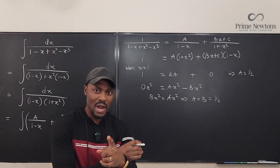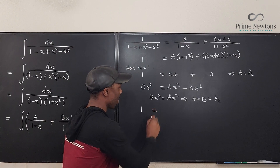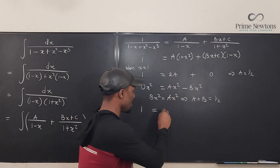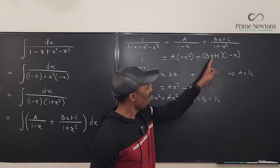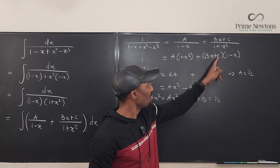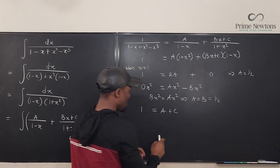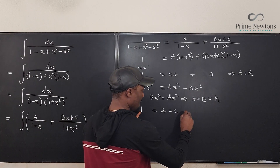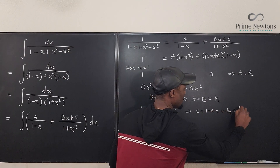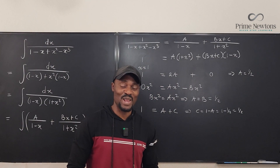Now for the constant terms. Expanding the right side, the constants are A from A(1 + x²) and C from (Bx + C)(1 - x). So A + C = 1. Since A = 1/2, we get C = 1 - 1/2 = 1/2. So A = B = C = 1/2. Beautiful.